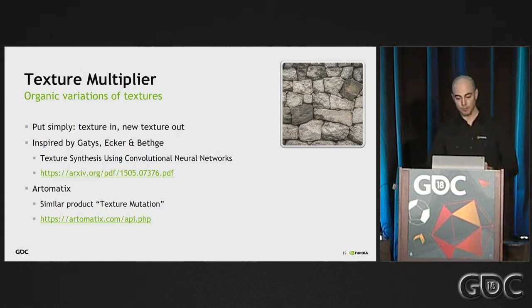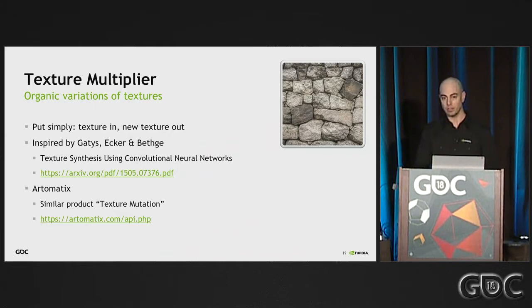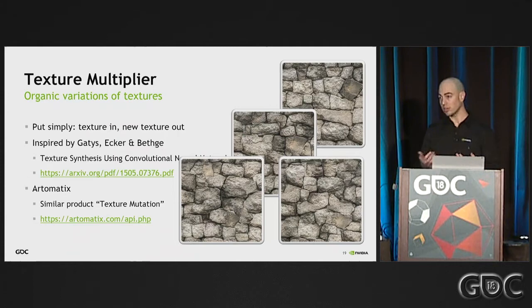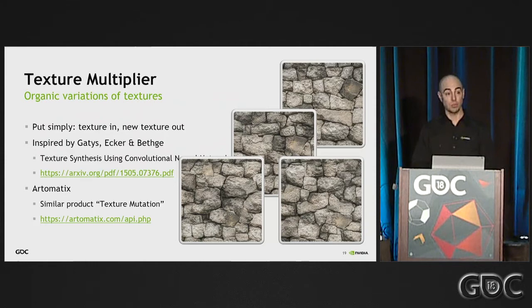The other tool is the Texture Multiplier — we've been working with Brian's team, looking at ways to use infilling as well. This tool takes an input and gives variations. It's very good with natural organic textures like rocks, leaves, grass, moss, and pebbles. If you need variations or tiling — for instance, a desert terrain getting typical seams — you can use this tool to help with tiling.